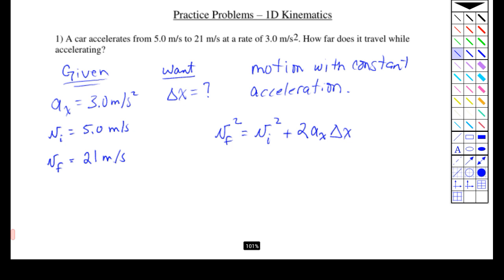In this equation, we know the final velocity, the initial velocity, and the acceleration. The only thing we don't know is delta x.